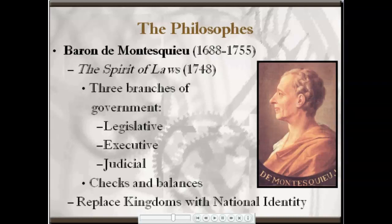Montesquieu also recognized that this type of representative government would necessarily lead to the elimination of privileged positions such as that of the king. Without a king, kingdoms would have no central identifying factor. In traditional society, kings ruled over their land and individuals that lived there were subjects of the king — for example, members of the French kingdom and thereby subjects of the French king. Without kings, an alternate form of identity would have to be developed. Montesquieu proposed the creation of what he called a national identity, where members of the same nation had a shared history, shared culture, and shared language, rather than the shared experience of being ruled by the same absolutist king.